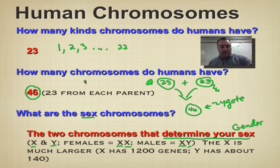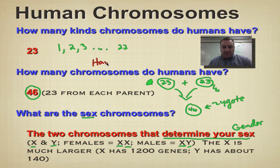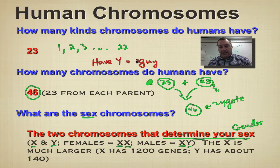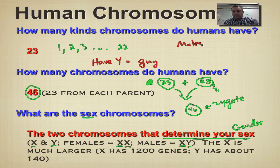Here's the way you want to remember this: when it comes to chromosomes, if you have a Y, you're a guy. So if you have a Y chromosome, you're a guy — have a Y, you're a guy, that's it. The one thing you do want to remember is that males will determine the sex of the baby.